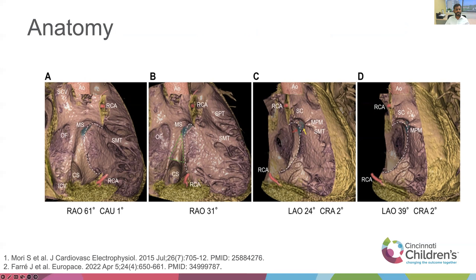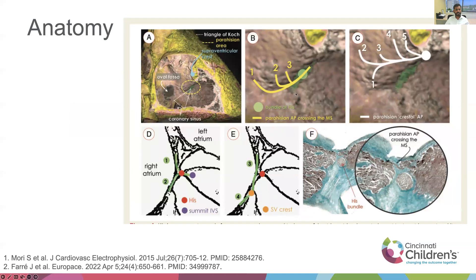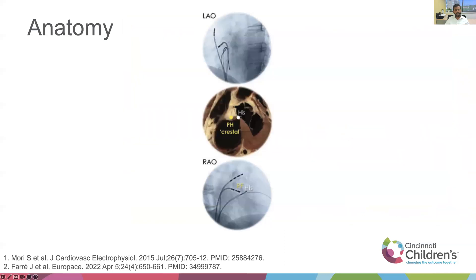One important structure is the supraventricular crest, which is very close to the membranous septum. Within accessory pathways in this location, there are two separate types: one type where the accessory pathway arises in this location, crosses the membranous septum, and inserts on top of the interventricular septum. Whereas in another type, the accessory pathway actually inserts into the supraventricular crest. In the LAO view, these are often called midseptal accessory pathways — sometimes cheating to the right — and are often successfully targeted at the supraventricular crest.